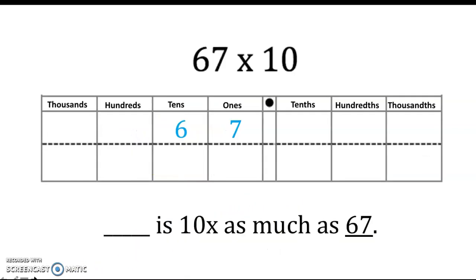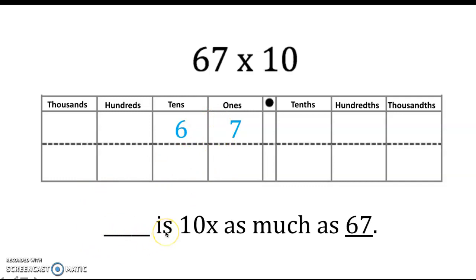Let's put this into an example. Using our understanding of 10 times as much as, you can break this down using the place value chart into a few steps. When comparing the relationship between the product and the factor — the factor being 67 and the product being the answer to multiplying 67 by 10 — my first step is to put the digits into the place value chart. So I know that 67 is composed of six tens and seven ones. My next step is to write down a blank space where our product will go, writing the sentence: the product is 10 times as much as 67, which is our factor that we're multiplying by 10.